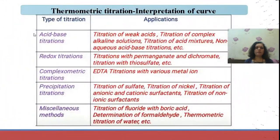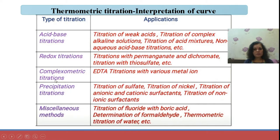Thermometric titration can be performed in different types: acid-base or neutralization titration, redox titration, complexometric titration, precipitation titration, and miscellaneous methods such as titration of fluoride with boric acid, determination of formaldehyde, and thermometric titration of water. This demonstrates the broad application of thermometric titration where we can find out the delta H value.